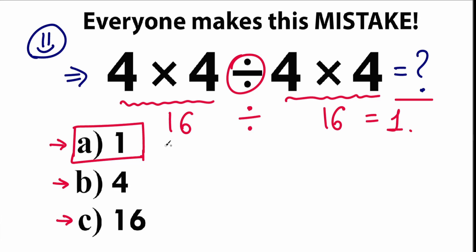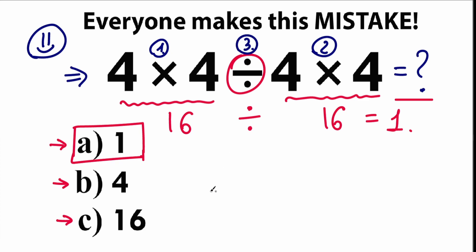I want you to understand that in terms of math, we can't solve our question randomly — we can't do whatever we want. We need to know about basic math principles, basic math order of operations. We can't, for example, do multiplication first, then multiplication again on the right, and then division at the end. We need to know about the thing which is called order of operations.